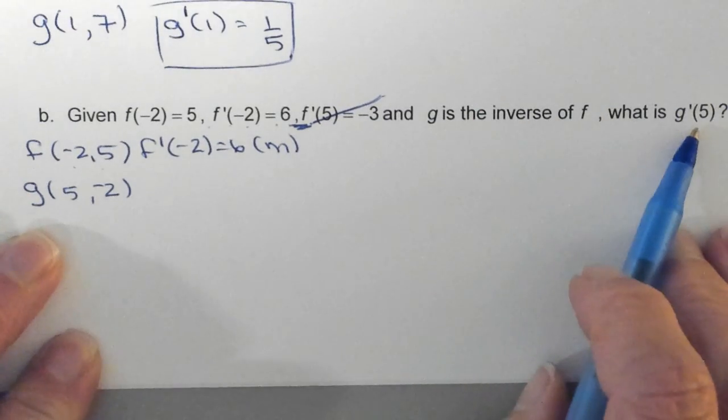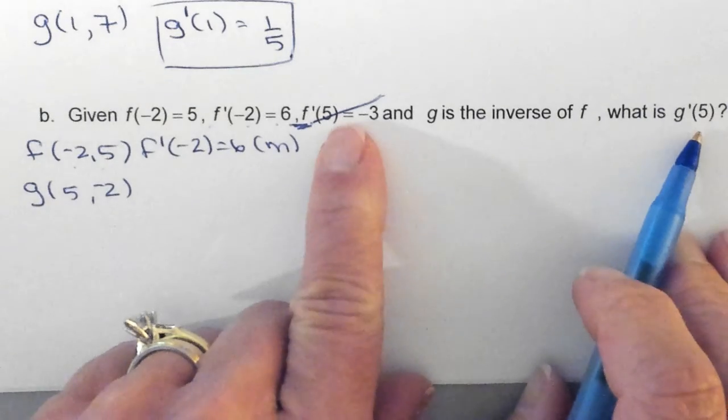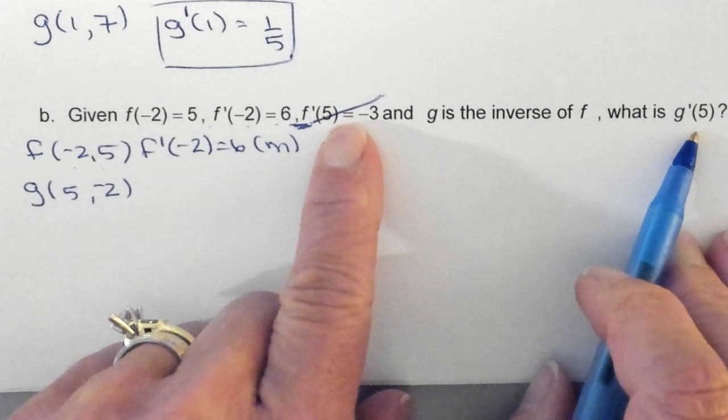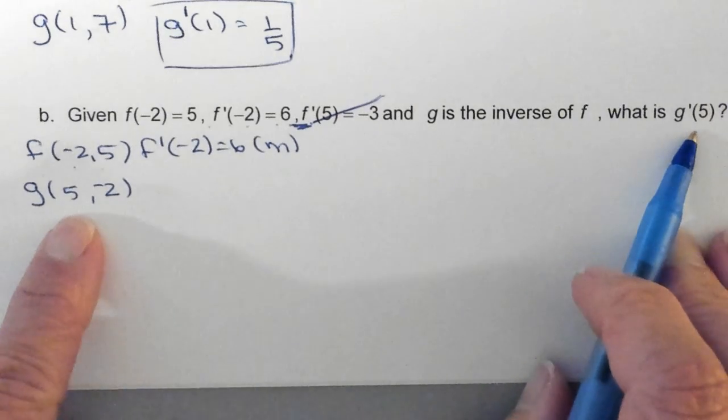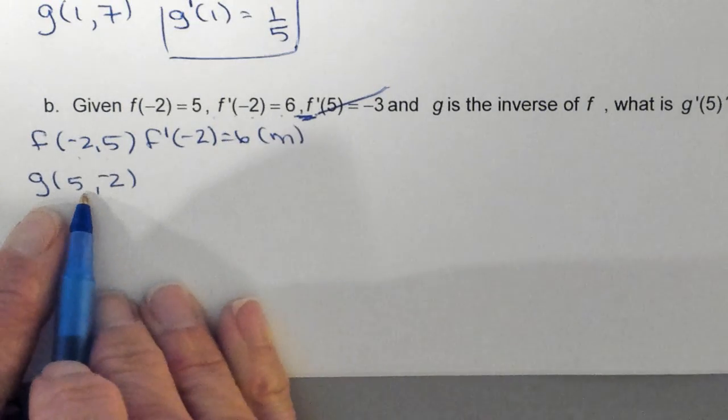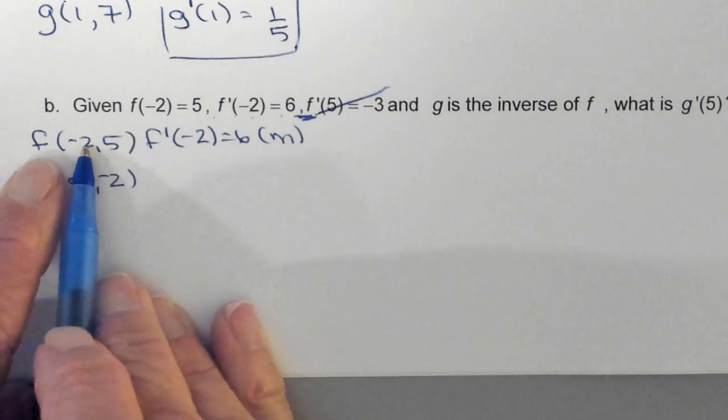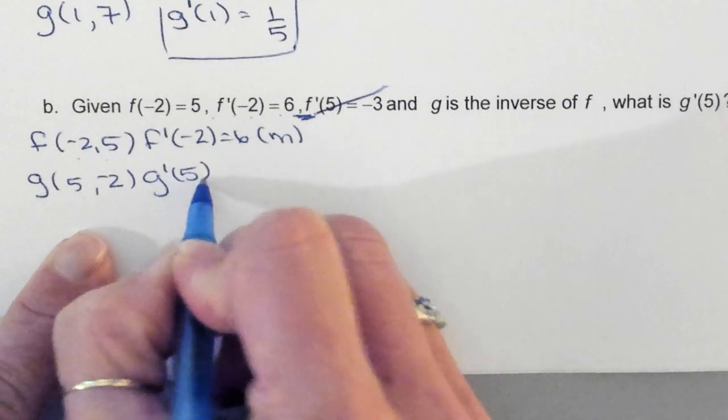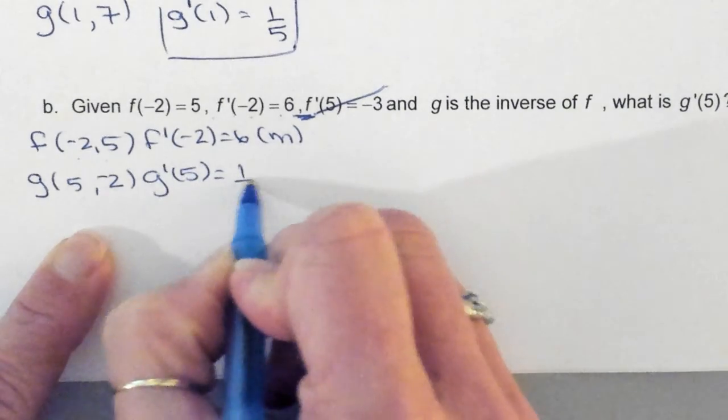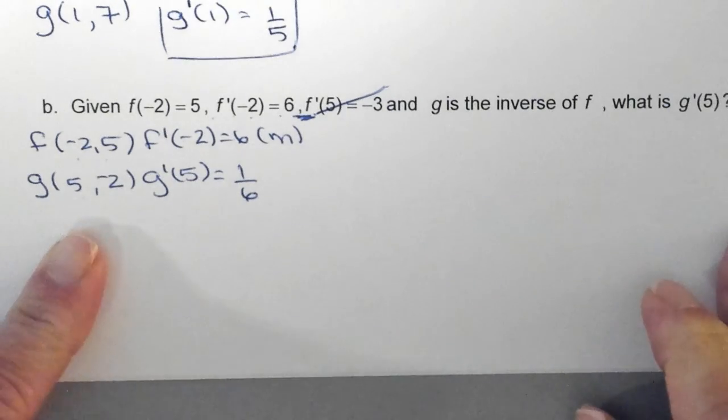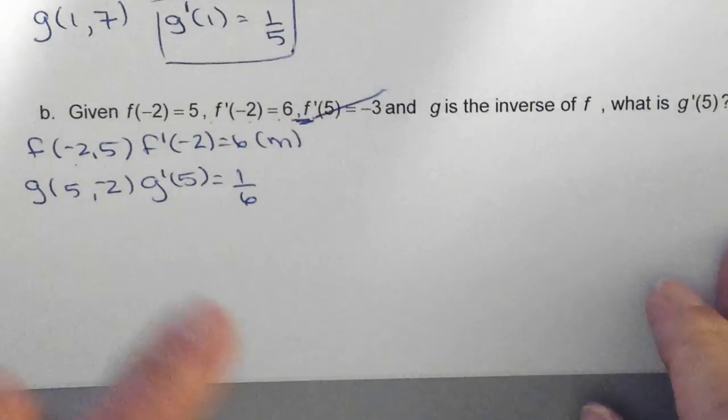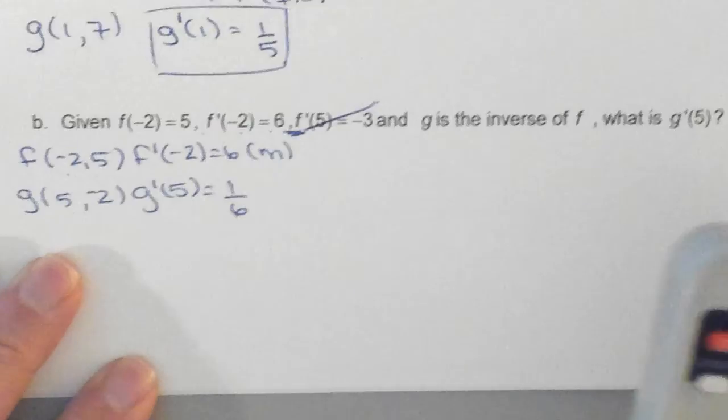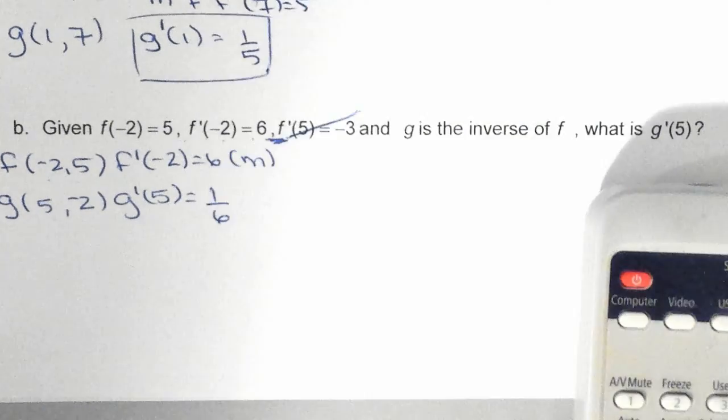Then it says what is g prime of 5? This was meant to throw me off. G prime of 5 relates to this, which then in turn is the inverse of this. So what is g prime of 5? 1 over 6. You have to be careful because it is intended to throw you off.